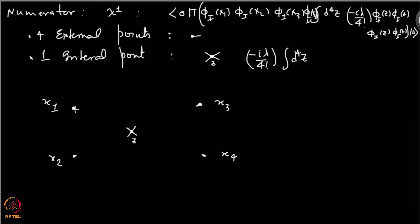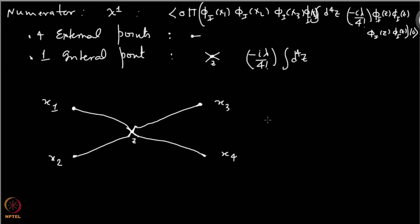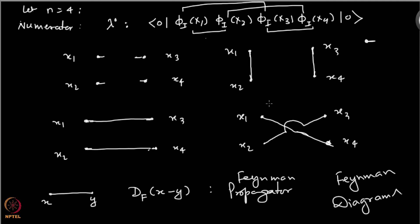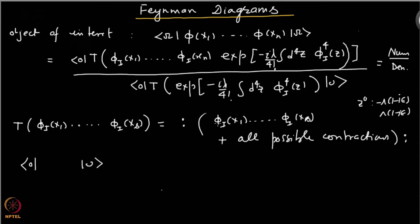Now let us do contractions — there are many and let us write one of them. So the stick at z corresponds to the four phi fields there. One possibility is I contract phi(x₁) with the first phi here — that is one fundamental propagator. Then I contract phi(x₂) with another phi at z, similarly phi(x₃) and phi(x₄) each contracting with one of the remaining sticks at z. So that is one possible term. And of course there are many more contractions — let me draw one more, because you have to add all of them — that is your Wick's theorem.